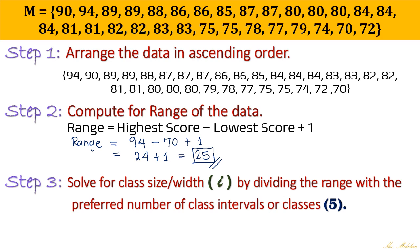So with that, let us find out the class size or class width. Okay, so again, what are we going to do is simply divide the range. So we got 25 then divided by the preferred number of classes. This is 5. So that means our class size will be equal to 5. So 25 divided by 5 is 5.